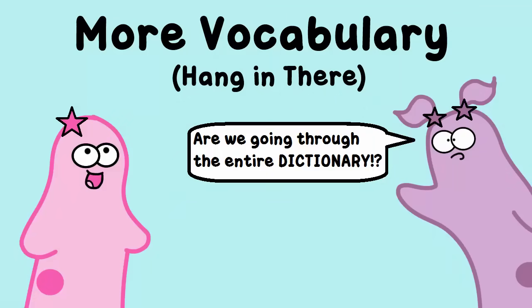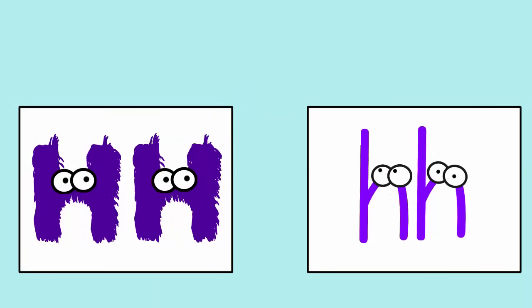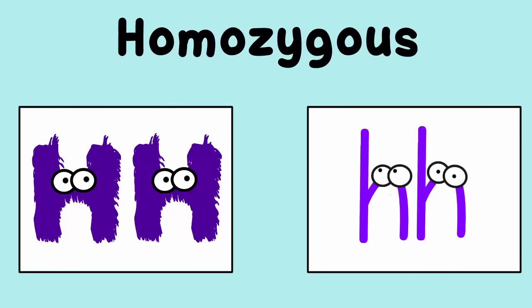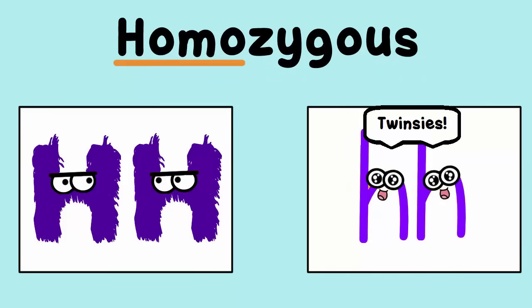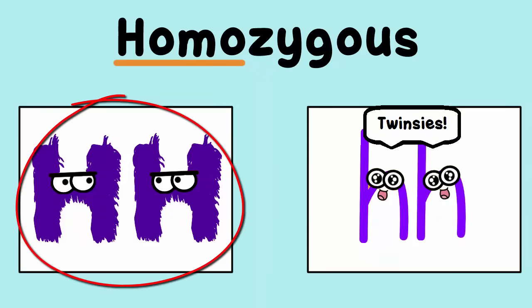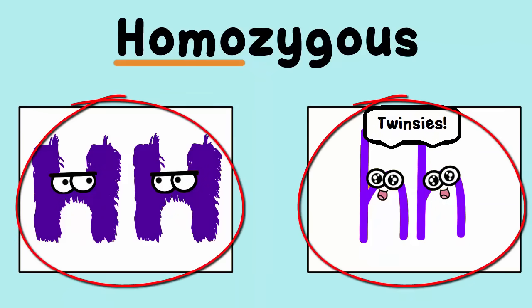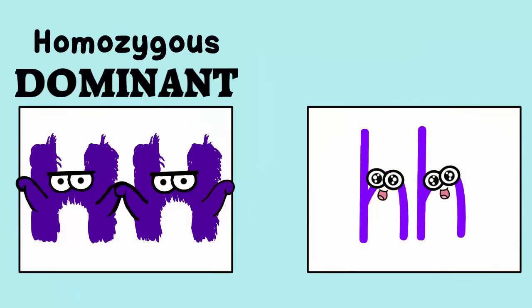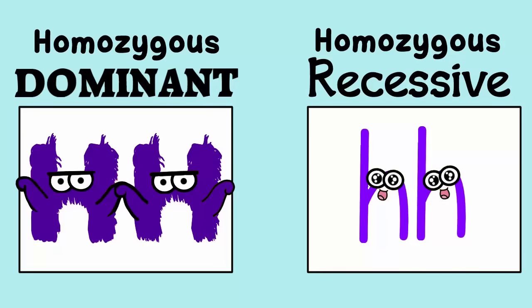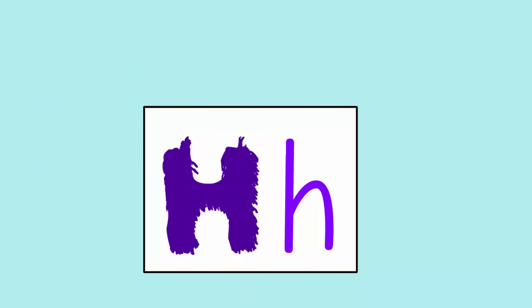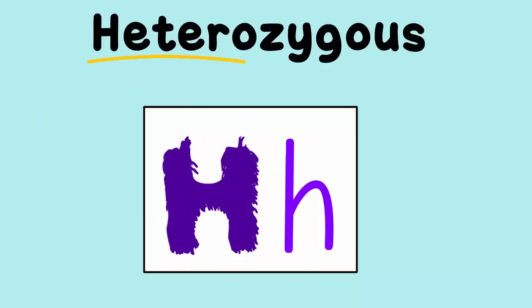We're not quite done with the vocab. A genotype of capital H, capital H, or lowercase h, lowercase h is considered homozygous. The root in this word means 'same,' and the letters are the same case: capital H, capital H are both capitals, and lowercase h, lowercase h are both lowercase. So capital H, capital H is called homozygous dominant, and lowercase h, lowercase h is homozygous recessive. A genotype of capital H, lowercase h is considered heterozygous — the root means 'different' — because one letter is capital and one is lowercase.